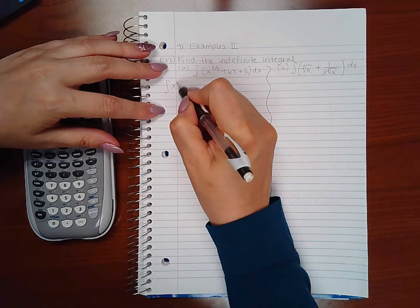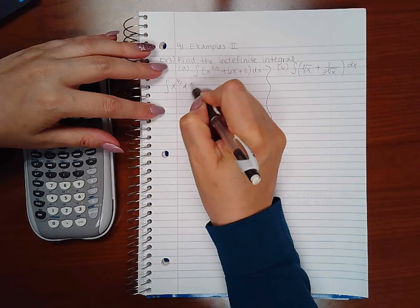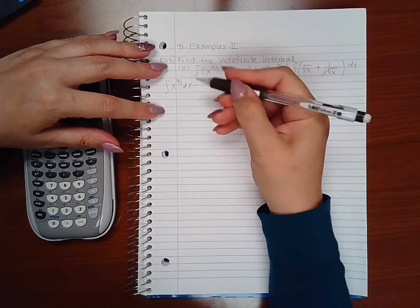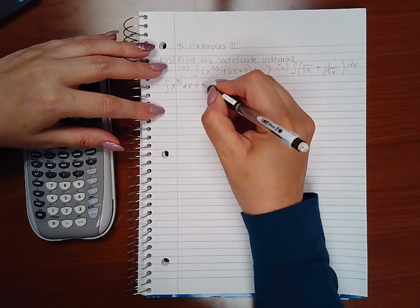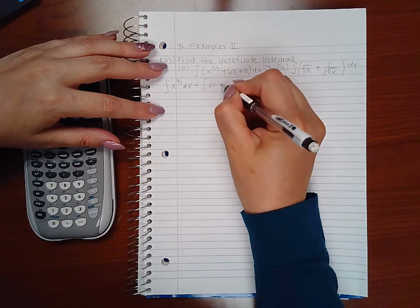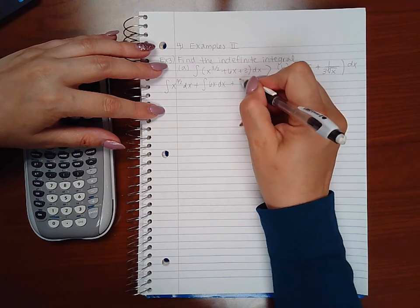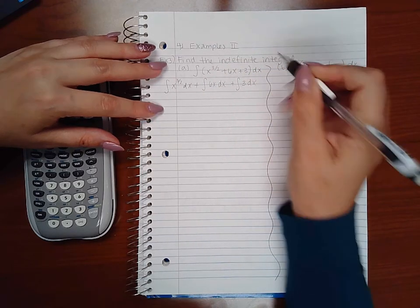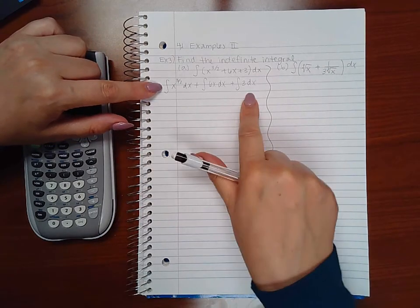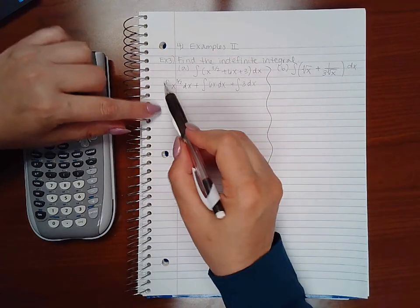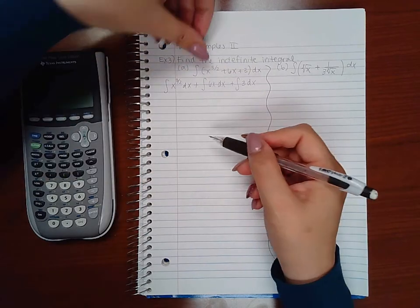Instead of writing this out, usually we don't do that—we just go straight into it. Technically, you're integrating each piece, but this line we don't usually write. We just start going into it.